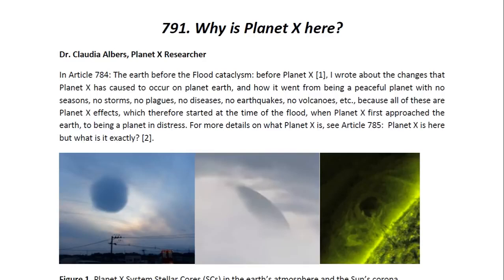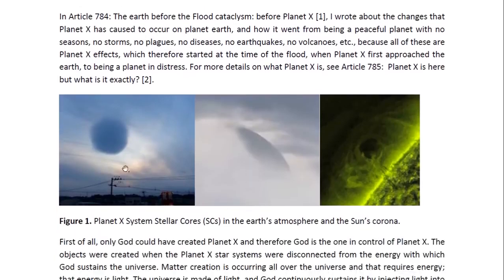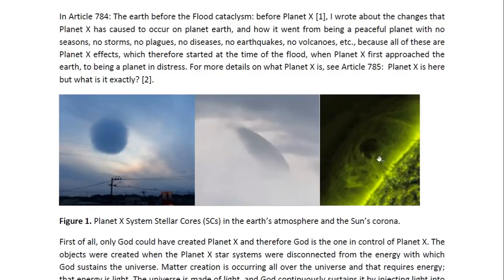But what is it exactly? You can see some of these Planet X systems — stellar cores. These are what Planet X is. Planet X is basically the core systems of destroyed planets and stars. These are part of these core systems. You can see there's a solid object there. They surround it in a gaseous cloud envelope. They create matter, they create these gases, and they make connections through these gases.